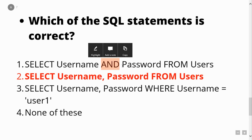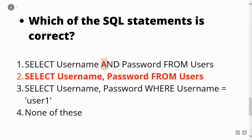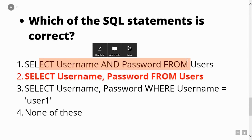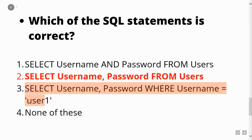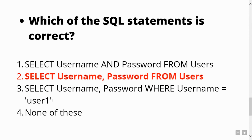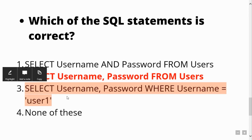The keyword 'and' is used in conditions like 'where', so it will not come in a SELECT column list — option one is not correct. Similarly, the third option — 'select username, password where username equals to user1' — we haven't specified the table name using the 'from' keyword, so query three is also not correct.